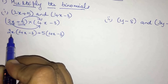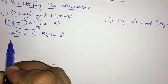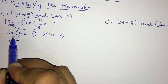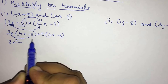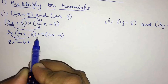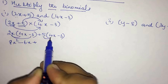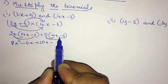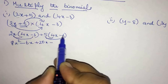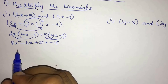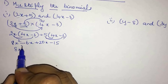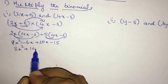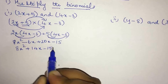Multiplying 2x into 4x gives 8x², minus 2x into 3 gives -6x, plus 5 into 4x gives 20x, and 5 into -3 gives -15. So the simplified answer is 8x² + 14x - 15.